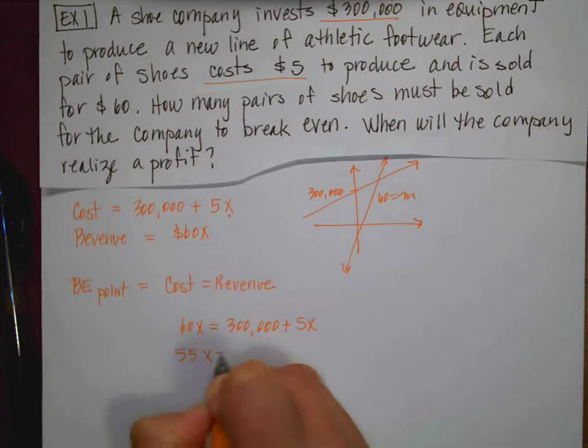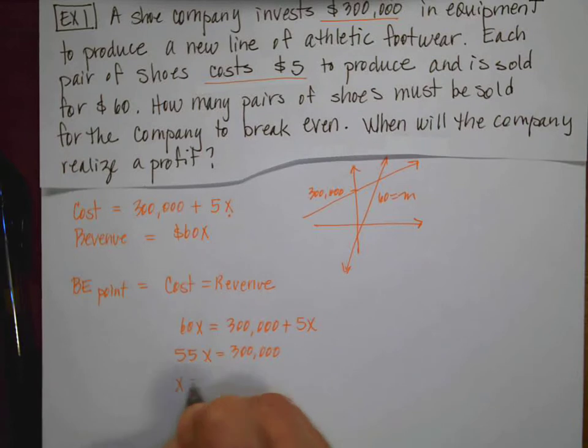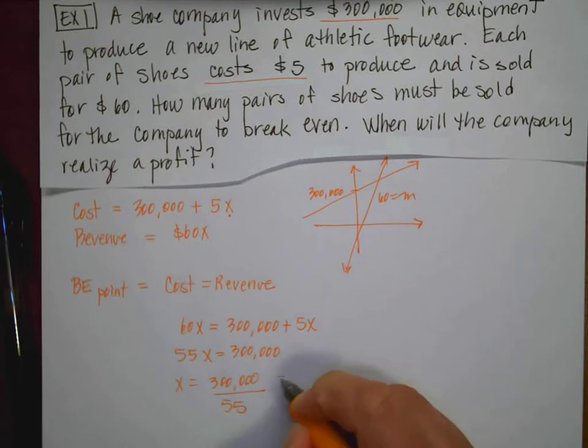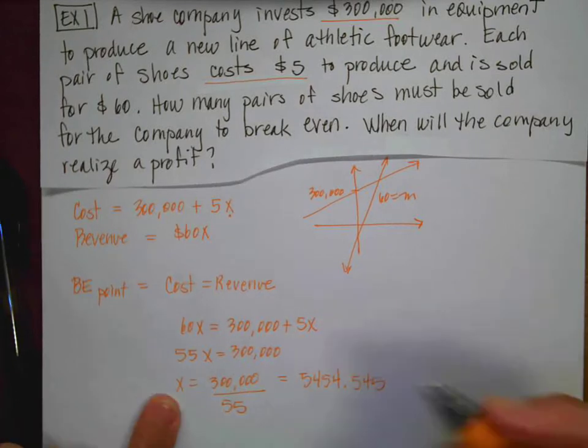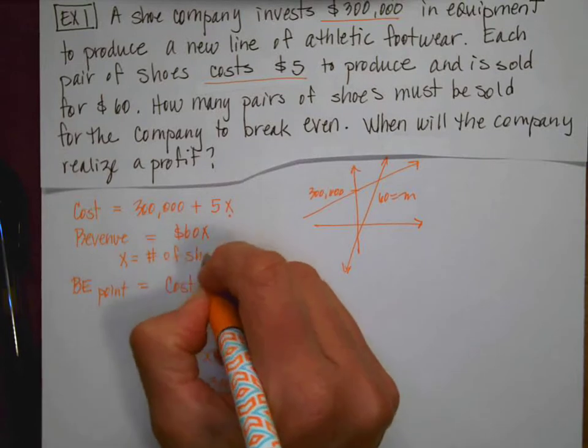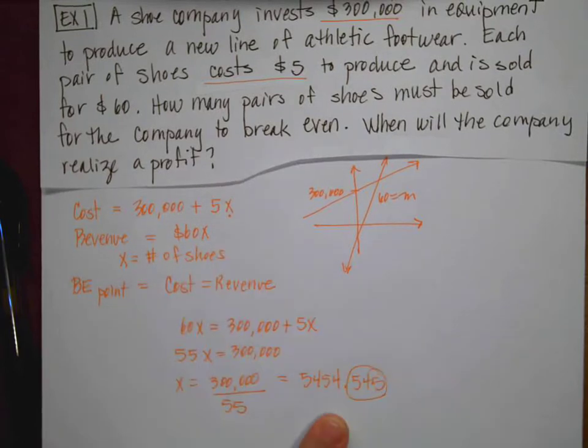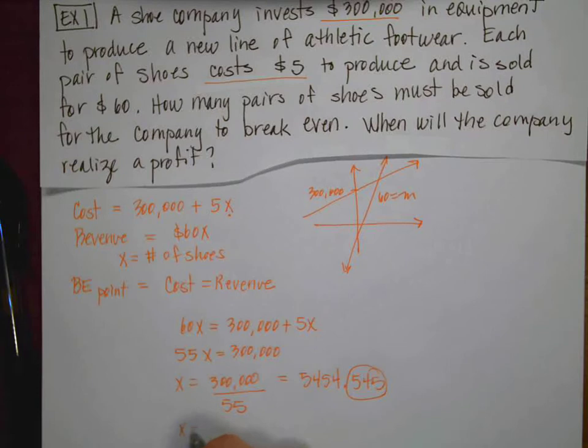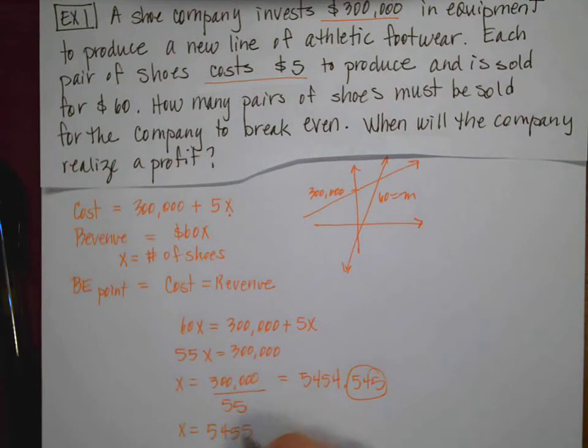I'm going to get 55x is $300,000. And then if I divide, x is going to equal the $300,000 divided by 55. And that's going to give me 5454.545. Now if x represents the number of shoes that I'm going to make, it's really weird to make 0.545 of a shoe. So I'm going to round up and say that x is equal to 5455 shoes for the break even point.